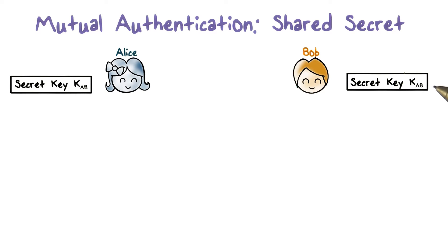Let's take a look at authentication. Alice needs to prove to Bob that she's really Alice, and vice versa, meaning that Bob needs to prove to Alice that he's Bob. Suppose that Alice and Bob share a secret key, KAB. That is, only Bob and Alice know this key, KAB.